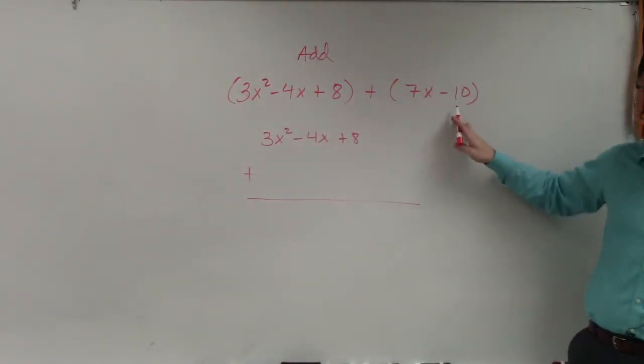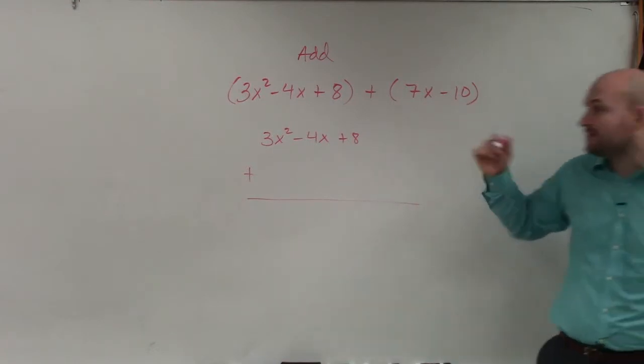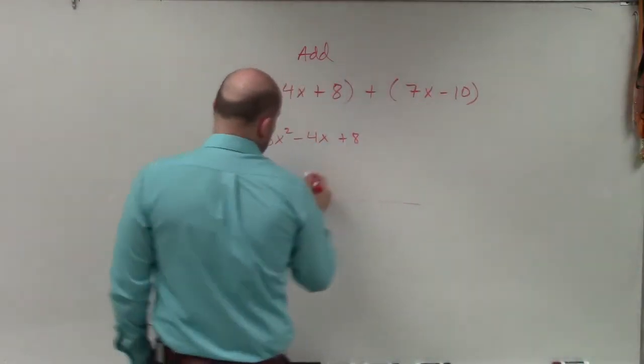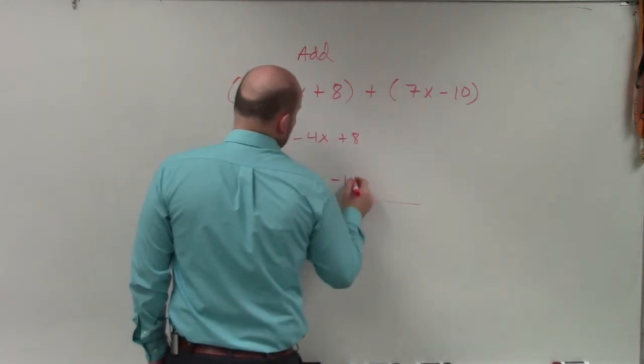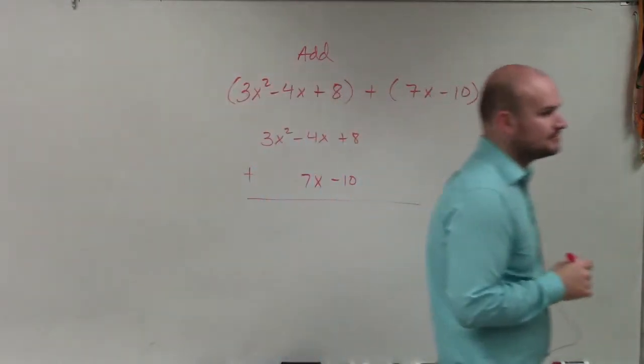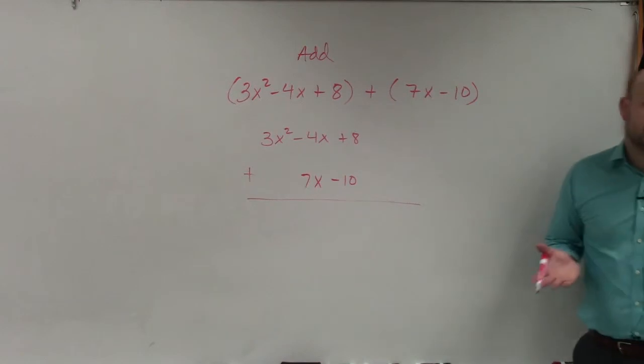Then I'm basically going to take these terms and align them with their common factors. So 7x has a common factor with -4x, and then -10 has a common factor with my 8. So do you guys see how I align them?